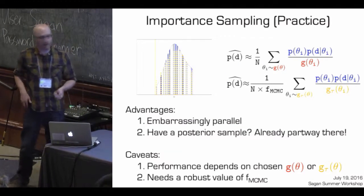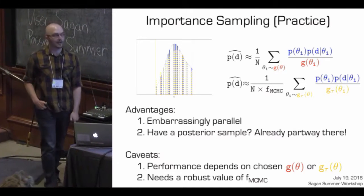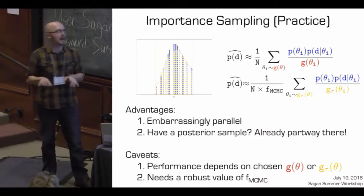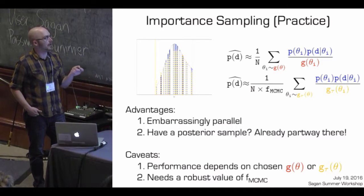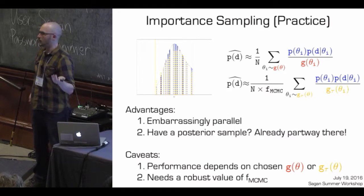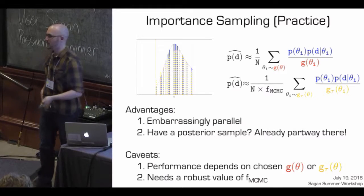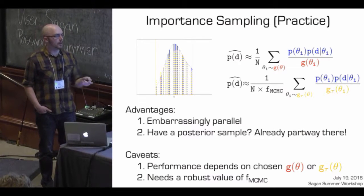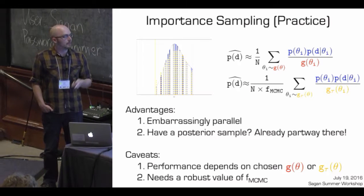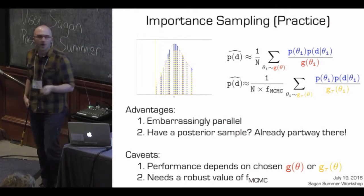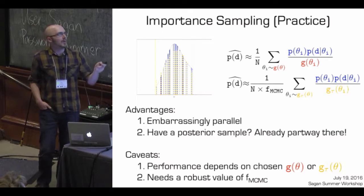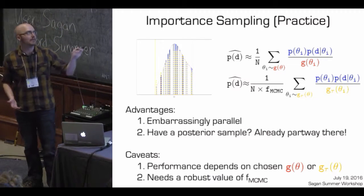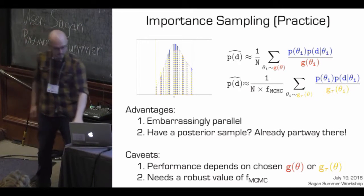Advantages of importance sampling: it is embarrassingly parallel — you can easily farm out a million samples into parallel tasks. If you've already done an MCMC, you're already part way to computing the evidence using the posterior samples. Some general problems: choosing g(theta) or a truncated g(theta) affects performance. You also need a robust estimate for the fraction of MCMC samples that fall in the subspace — if you have 10,000 samples but only one fell in the bin, that's not a robust estimate.